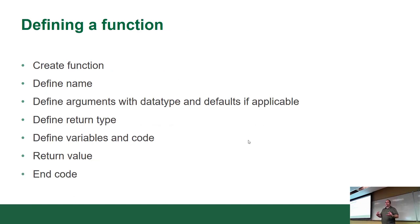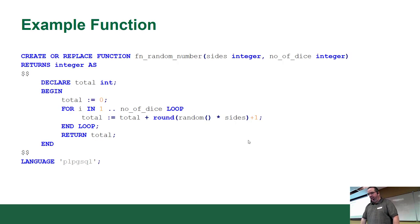In Java, in most general purpose languages, you can declare a variable anywhere you need it. With this, you have to declare them at the top. And if you didn't declare it, you can't use it. Very strict. Which allows it to be very efficient because it knows what it's expecting. When you define a function, tell me if this sounds familiar. There's a create function command. You define the name. I actually do have an example coming up. You define the arguments with the data types and defaults if applicable. You define the return type. You define the variables in the code, return value and code. That pretty much sounds like defining a function in any given language.